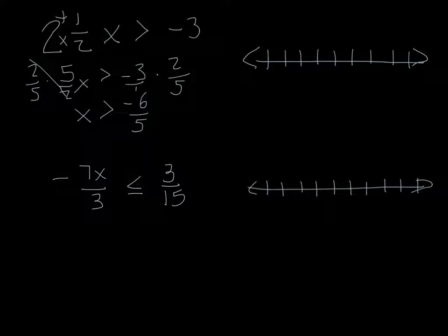And since we were talking about mixed numbers, this final answer should be simplified to a mixed number, which means that this would result in x being greater than negative one and one fifth, because five goes into six once with one left over, which is why we have the one up there.